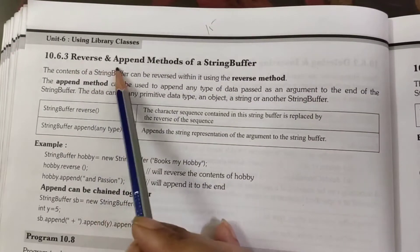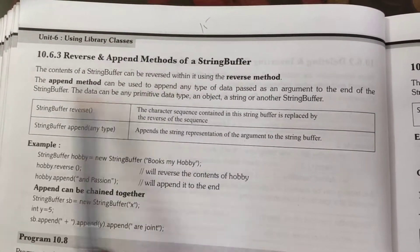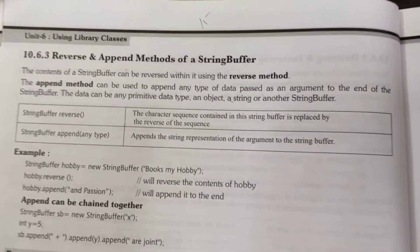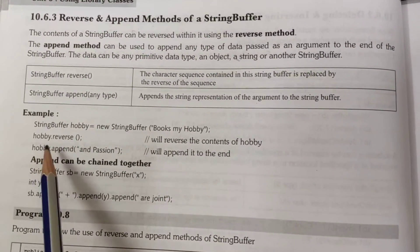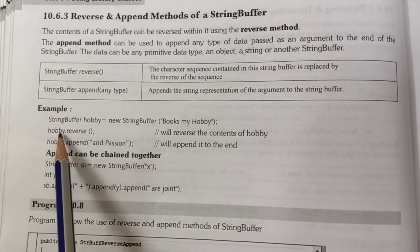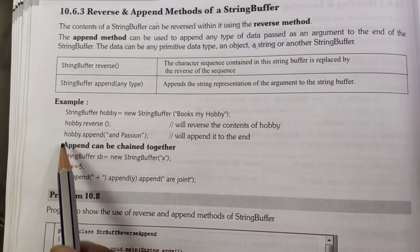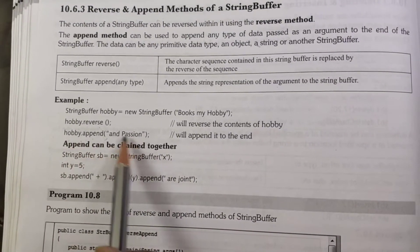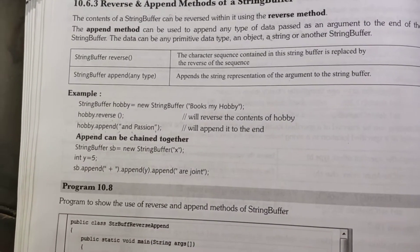The next accessor methods of StringBuffer class are reverse() and append(). The reverse() method is used to reverse all the contents of the string. The append() method is used to add contents to the existing string. For example, hobby.reverse() will reverse the content of hobby, and hobby.append("passion") will add "passion" to the existing hobby string.